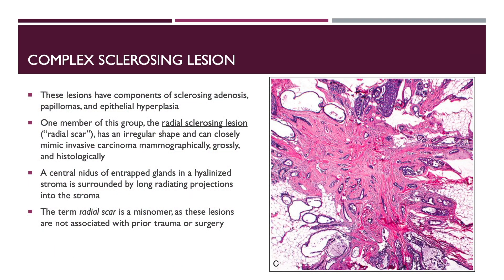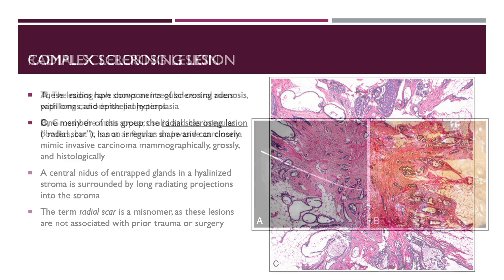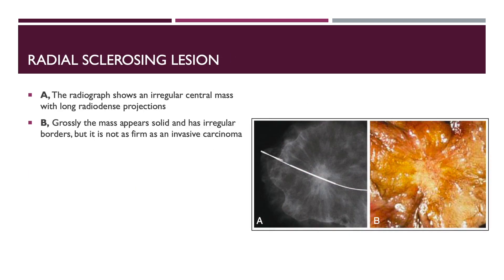Next is the complex sclerosing lesion. These lesions have components of sclerosing adenosis, papillomas, and epithelial hyperplasia. One member of this group, the radial sclerosing lesion, also called a radial scar, has an irregular shape and can closely mimic invasive carcinoma mammographically, grossly, and histologically. A central nidus of entrapped glands in hyaline stroma is surrounded by long radiating projections into the stroma. The term radial scar is actually a misnomer as these lesions are not associated with prior trauma or surgery. The radiograph shows an irregular central mass with long radio-dense projections — it looks like cancer — and grossly the mass also appears solid with irregular borders, though it is not as firm as invasive carcinoma.